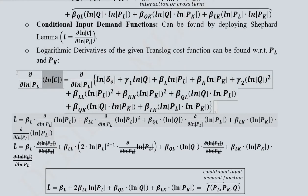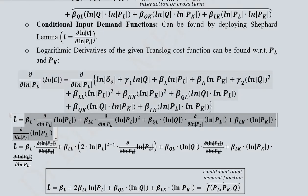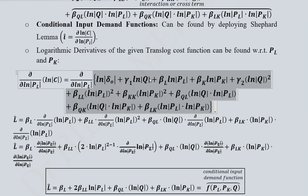On the left-hand side we have the derivative with respect to the natural log of the price of labor, applied to the same logarithmic cost function. The terms involving labor — specifically those with ln(p_L) — will be entertained, while remaining terms that do not contain labor will reduce to zero and disappear.